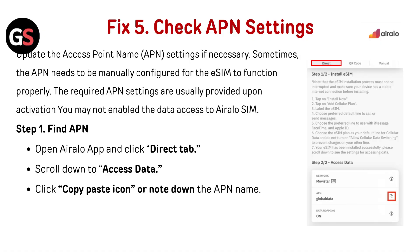Check APN settings. Update the access point name settings if necessary. Sometimes the APN needs to be manually configured for the eSIM to function properly. The required APN settings are usually provided upon activation. You may need to enable data access to the Airalo eSIM. Step 1: Find APN. Open the Airalo app and click the Direct tab. Scroll down to access data, then click the copy/paste icon or note down the APN name.